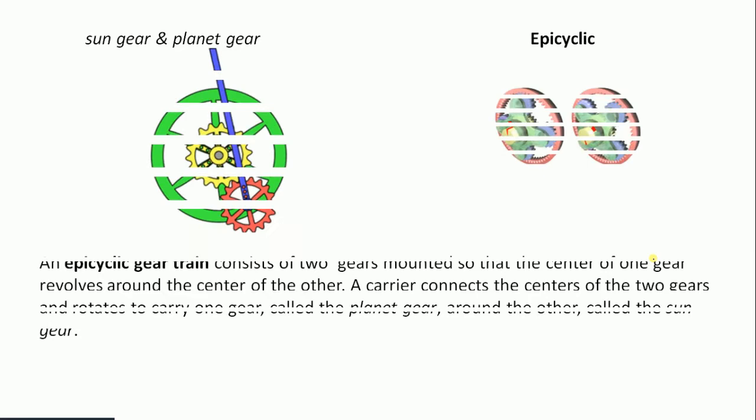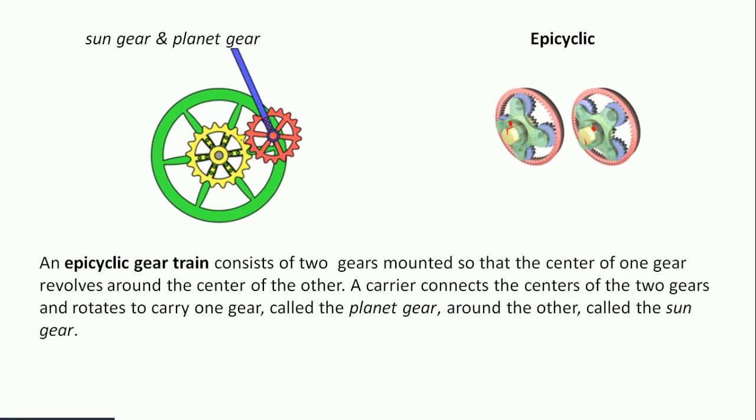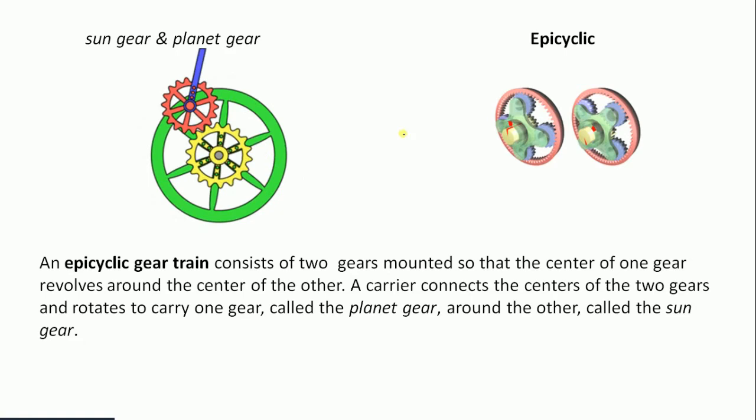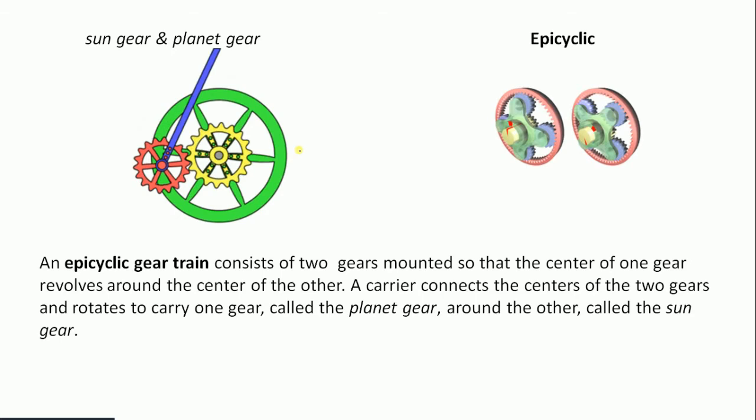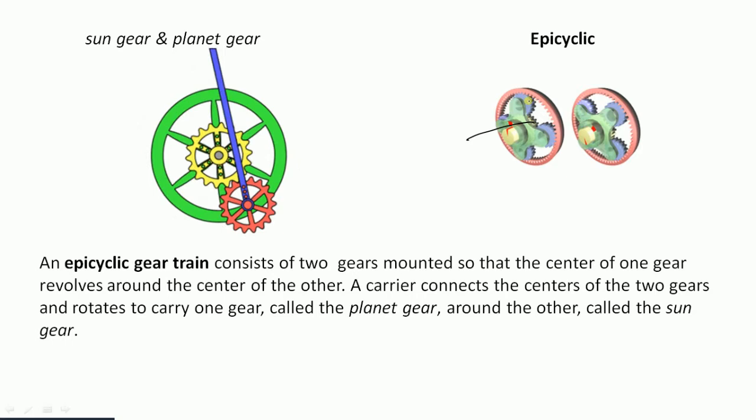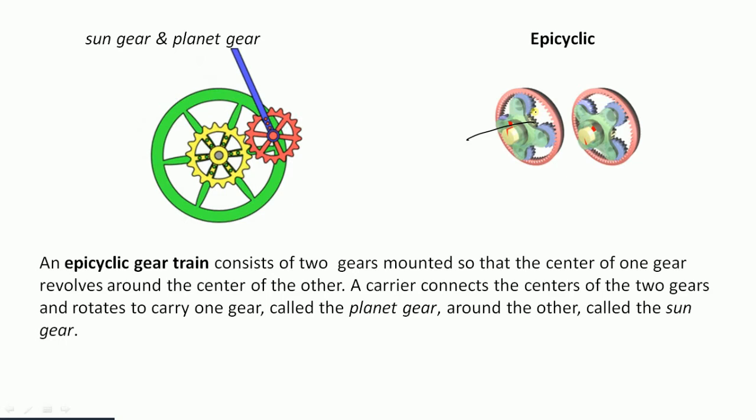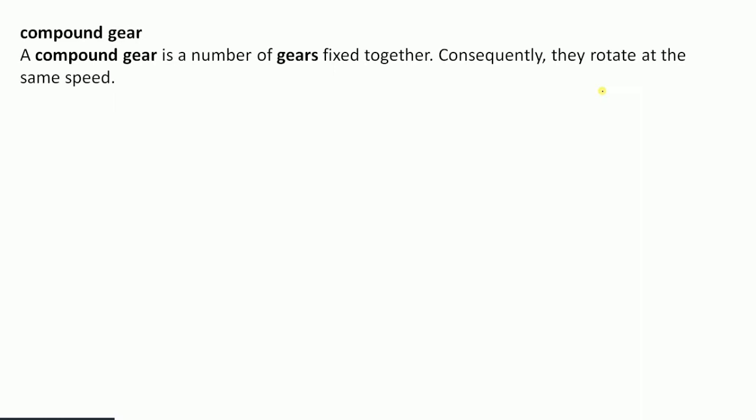In sun and planet gears, the middle gear is called the sun gear, while the gears rotating around it are called planet gears. An epicyclic gear is somewhat similar to a sun and planet gear — there is one gear in the middle with an arrangement of three or more gears, and it is also part of the sun and planet gear family.